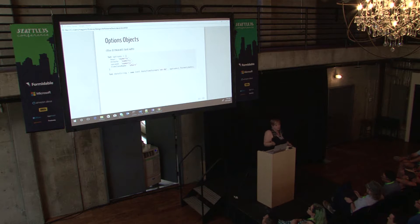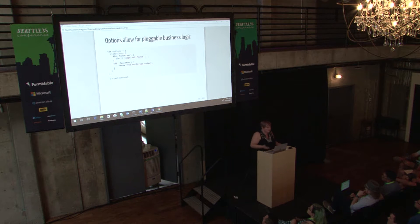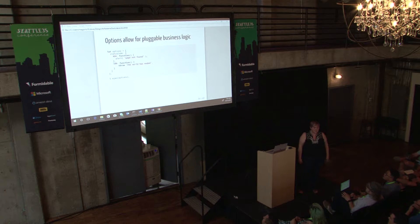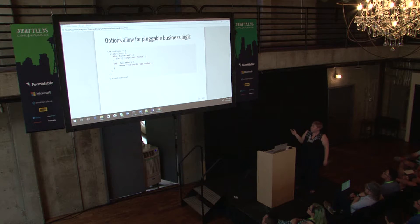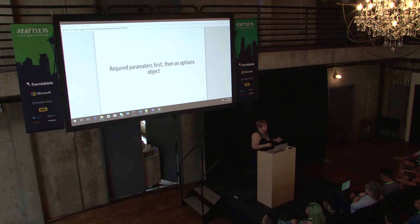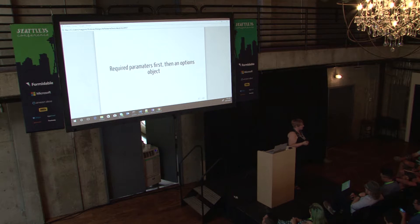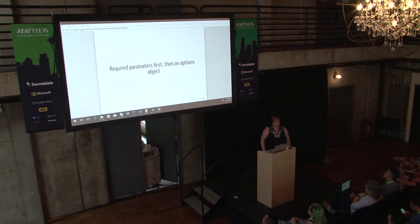Options objects will automatically clean up configuration in any API. And another awesome thing — back to jQuery — is that they'll allow for some pluggable business logic. Here we have an Ajax request coming out of jQuery, and you can see that we can automatically define behaviors when we get certain status codes. Options objects will let you scale that by allowing people to pass in configuration functions easily. Put required parameters first on any function, then tag to the end an options object, and almost any API will be cleaned up very quickly.